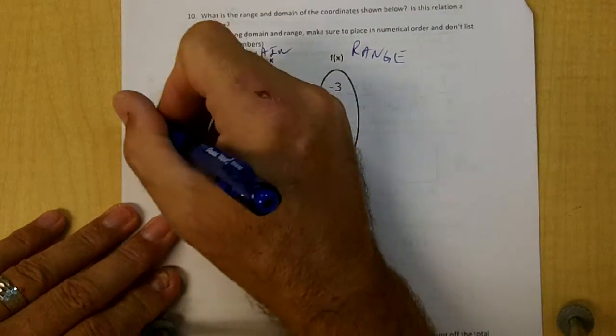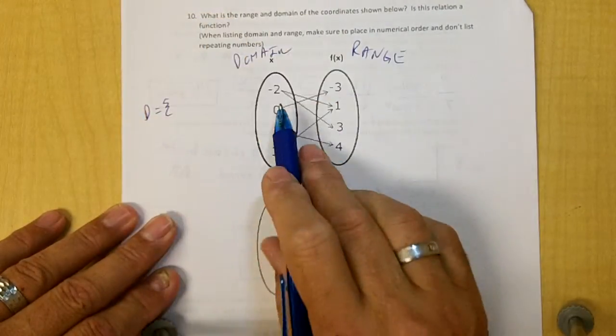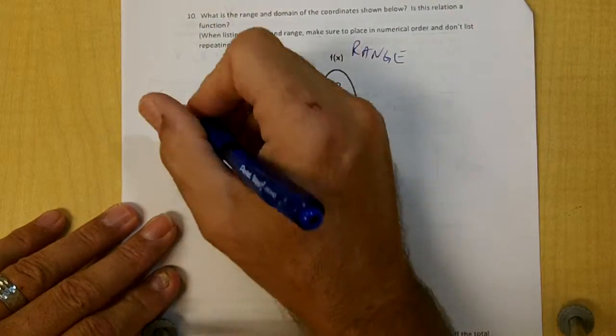Okay, so our domain would be negative 2, 0, 1, and 3.